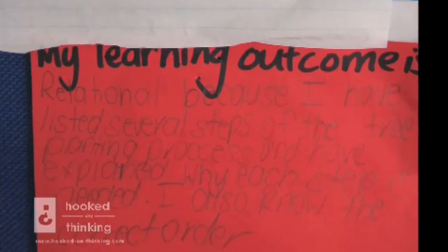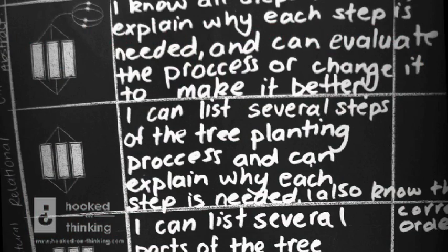Then after they'd written their report they came out and evaluated their own learning outcome and they used the rubrics to help them mark against it. They did really well. I found that by giving the children the key words to use it helped their writing a lot and improved the quality. It also made it easier for them when they were marking on the SOLO rubric to see where they were.